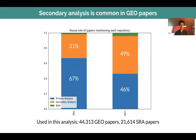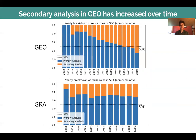Looking at 100% of papers that mention SRA and 100% that mention GEO, we can see that GEO has a higher proportion of papers doing secondary analysis than SRA. Looking at that trend over time, in GEO there is an increasing amount of secondary analysis, which actually exceeded the amount of primary analysis in 2016 and has increased since then. In SRA, it has been a pretty constant rate of secondary analysis around 30%.